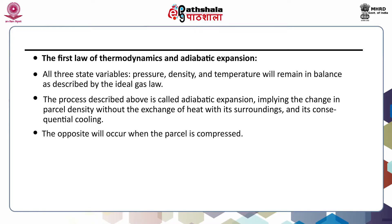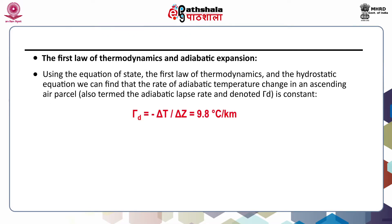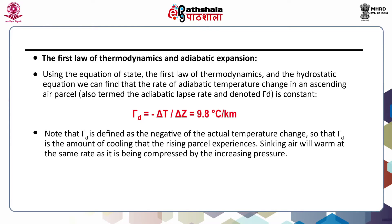The opposite occurs when the parcel is compressed — adiabatic compression always leads to warming. Using the equation of state, the first law of thermodynamics and the hydrostatic equation, we can find that the rate of adiabatic temperature change in an ascending air parcel is constant: gamma_d = −ΔT/Δz = 9.8°C per kilometer. Note that gamma_d is defined as the negative of the actual temperature change, so gamma_d is the amount of cooling the rising parcel experiences.